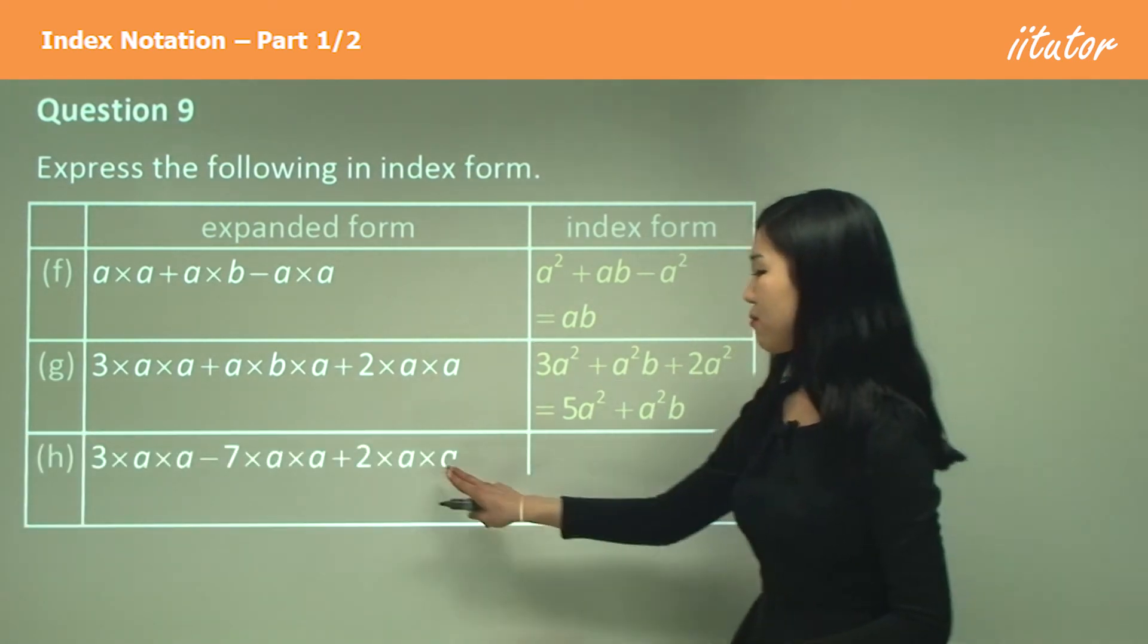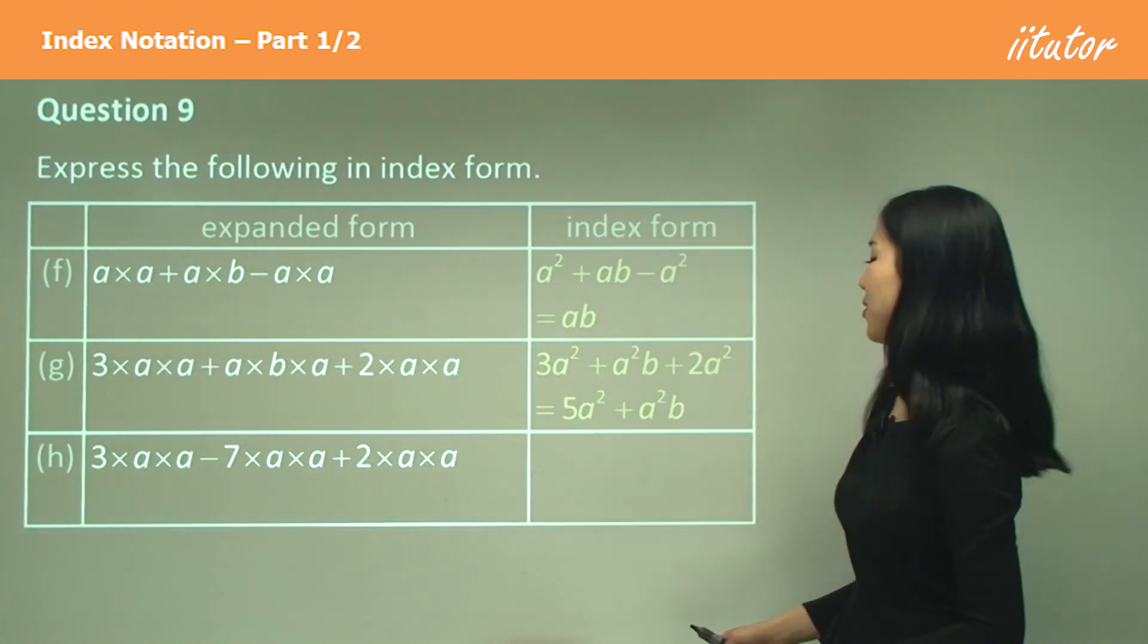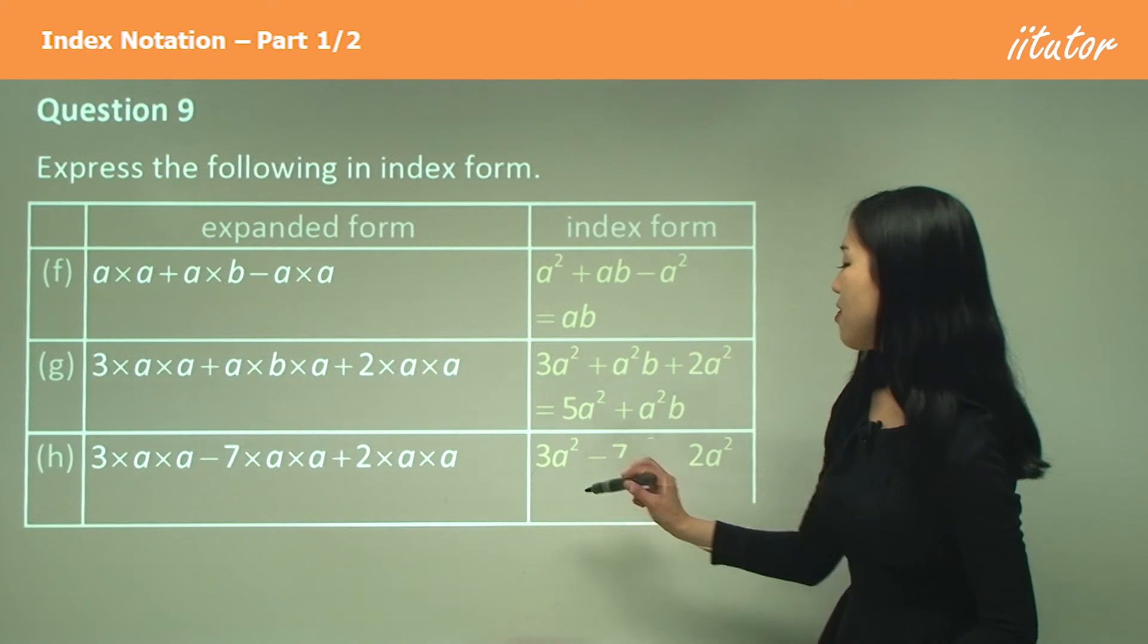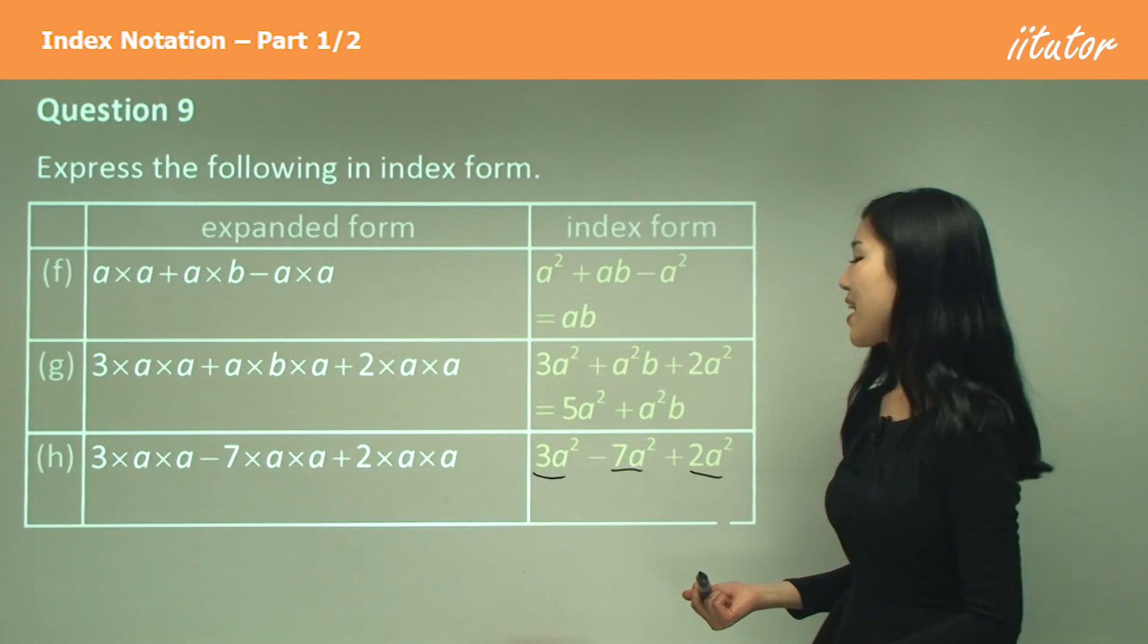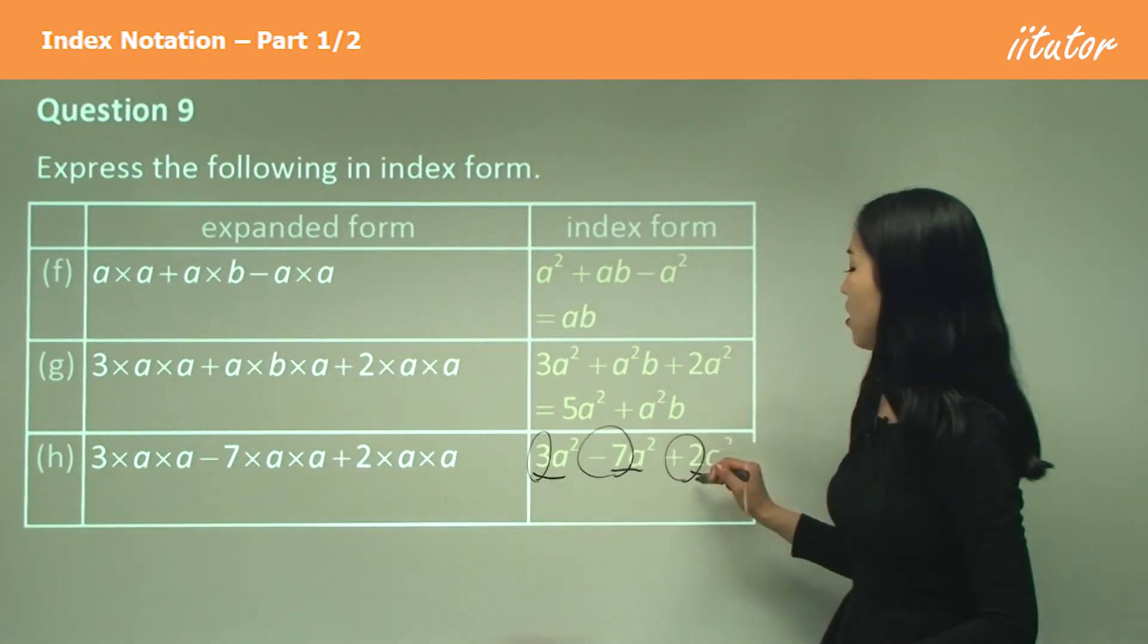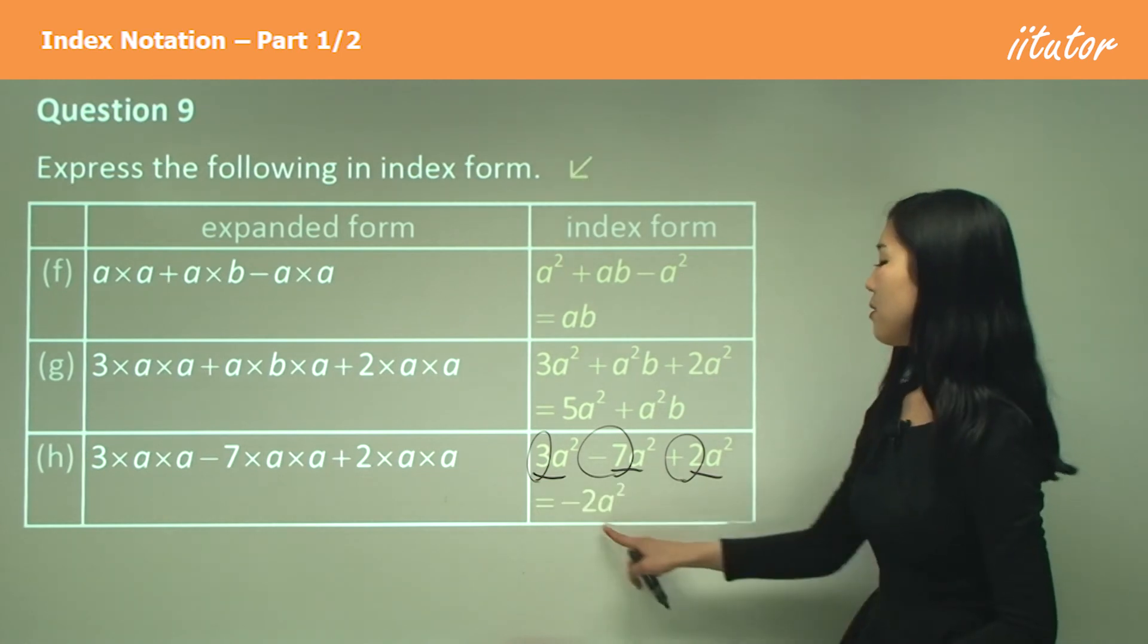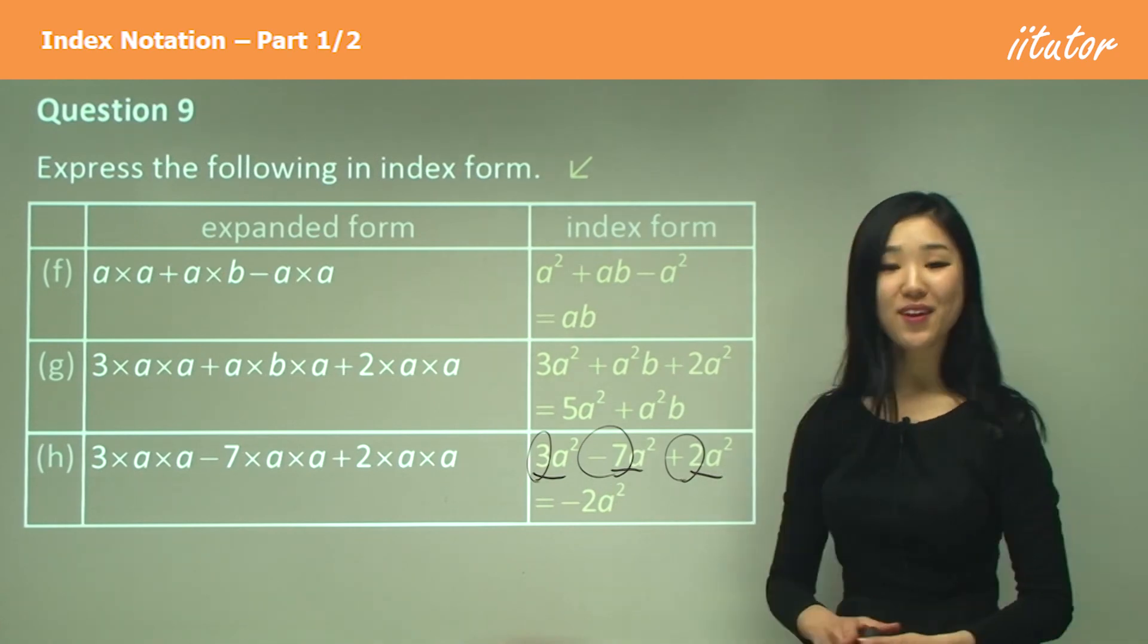Guys just write these in index form. See there's two a's here, two a's here and two a's here. So you should have 3a squared minus 7a squared plus 2a squared. What can you see guys? They are all like terms because they all end in a squared. So we can gather them all together. So now you just need to worry about the numbers. What's 3 minus 7 plus 2? 3 minus 7 plus 2 is minus 2 or negative 2. Negative 2a squared.